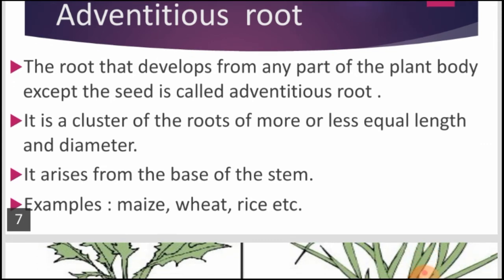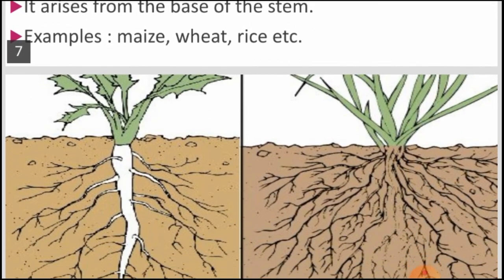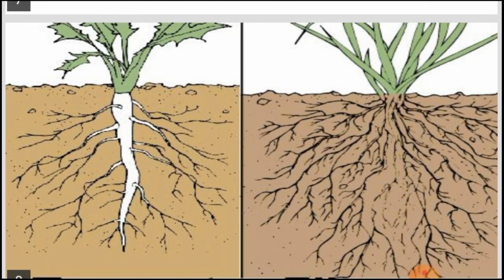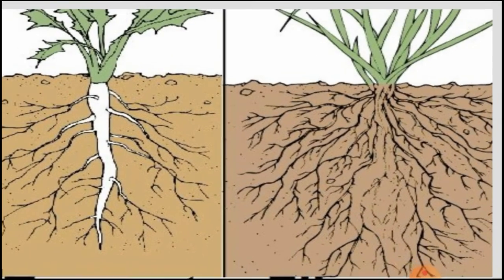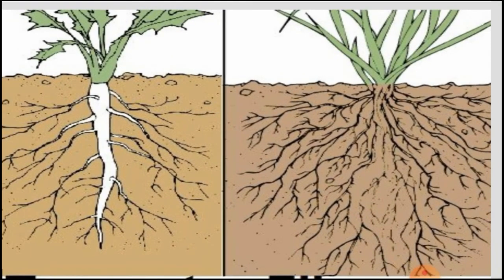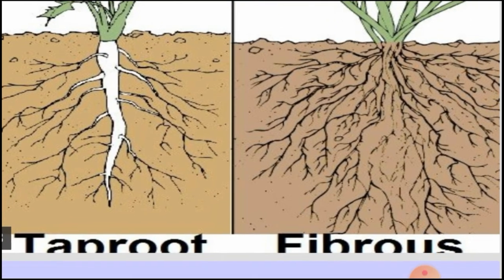Now let's have a comparative look at tap root and adventitious root. In the tap root system, the primary root gives secondary roots, which in turn give tertiary roots. In fibrous roots, all roots emerge from the same level and are mostly of similar thickness and length.